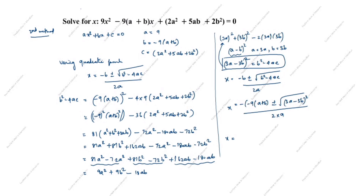So x = [9(a+b) ± (3a−3b)] / 18. The square and square root cancel, leaving 3a−3b. Multiplying out 9(a+b) gives 9a+9b, divided by 18.